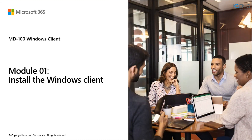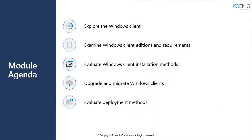Let me start off with our first module, which is about installing the Windows client environment. I will be using PPTs provided officially by Microsoft. In this first module, we are going to work on the following topics: exploring the Windows client, examining Windows client editions and requirements, evaluating Windows client installation methods, upgrading and migrating the Windows client, and evaluating the deployment methods.